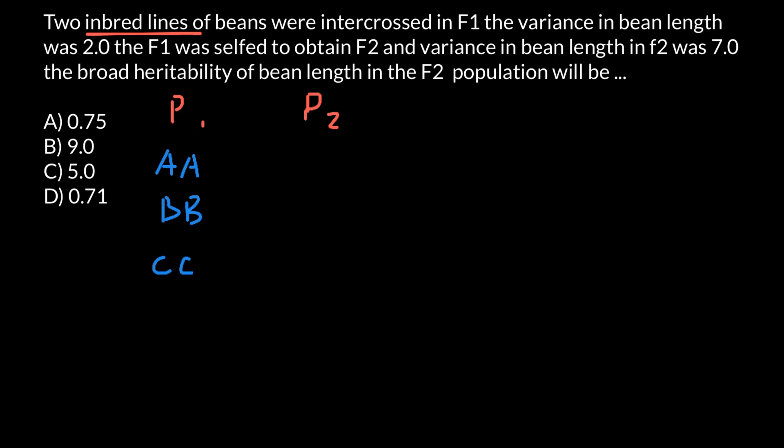As for Parent 2, because this is a different inbred line, for gene A it can be homozygous recessive, and for gene B it can be homozygous dominant. As you see, we have two different parents representing two different inbred lines. Because these are inbred lines, for all genes — in a diploid organism — both alleles would be fixed, whether homozygous dominant or homozygous recessive. If we see heterozygous genotypes, then it's not going to be an inbred line.